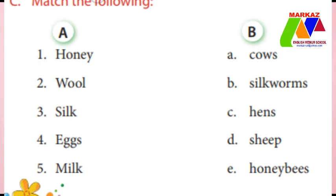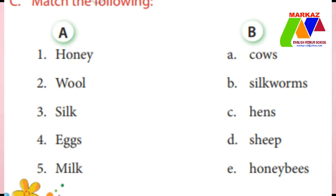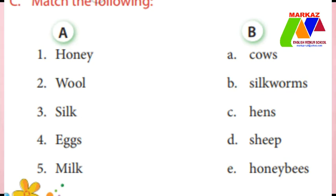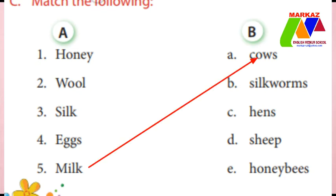Second: wool — we get wool from sheep, so match it with sheep. Third: silk — we get silk from silkworms, so match it. Fourth: eggs — we get eggs from hens. Last one: milk — we get milk from cows. Everyone should match it correctly.